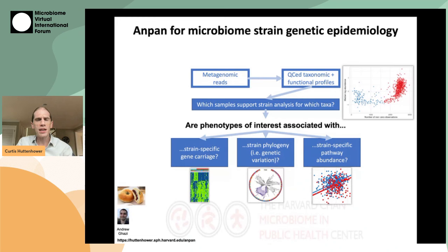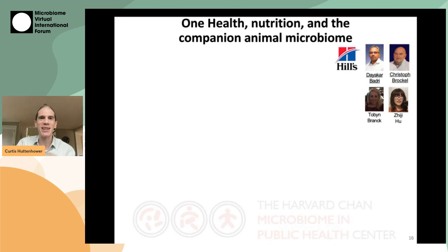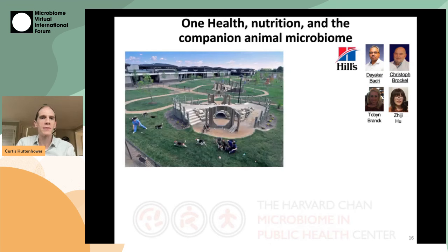We've used Anpan successfully in colorectal cancer microbiome analysis and rheumatoid arthritis analysis. I wanted to show a fun example today representing a collaboration we've had for several years with Hills Pet Nutrition — a fantastic platform for studying nutrition and the microbiome generally. It's really hard to get people to tell you what they eat, but Hills as a pet food company knows exactly what their research animals eat every day of their lives. We've used this both to study nutrition in the microbiome and some One Health aspects of how human microbiomes interact with companion animal microbiomes.